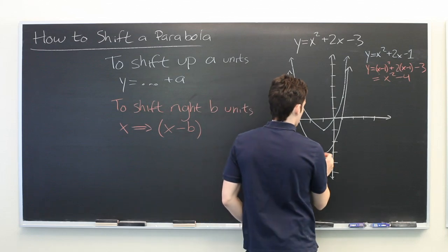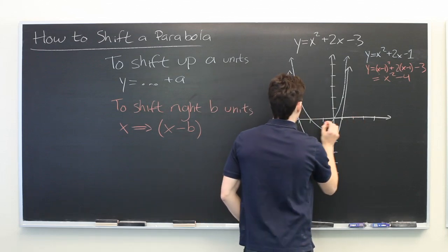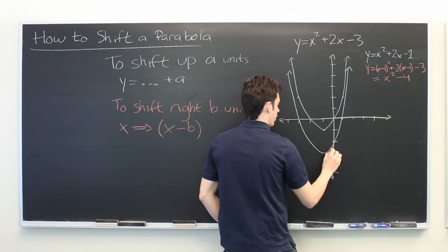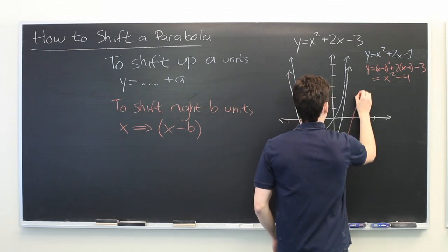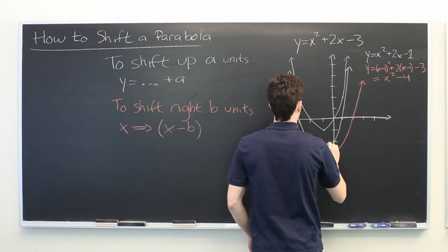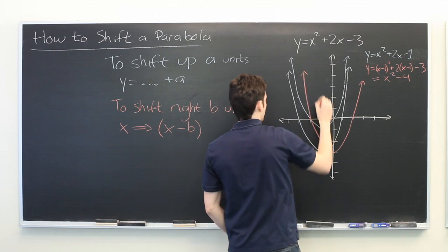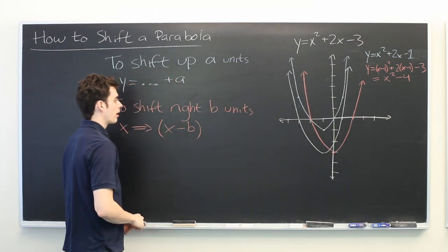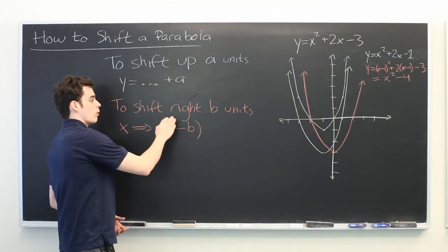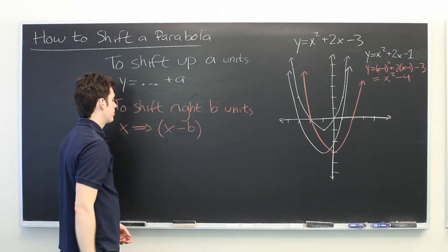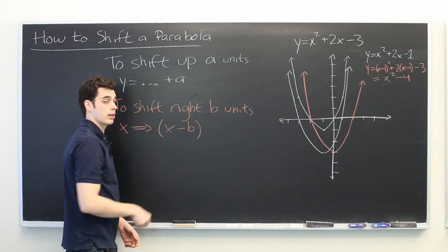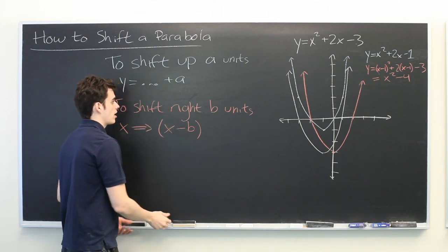So let's shift this over one unit to intercepts over one unit. And then we'll draw a parabola. There we have it. Similarly, if you want to shift to the left b units, you would simply write x plus b instead of minus. And that's all there is to it.